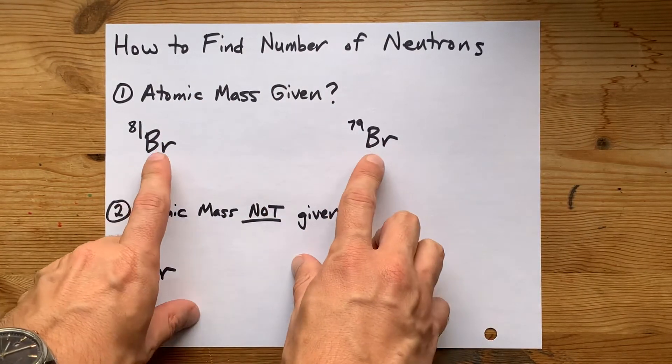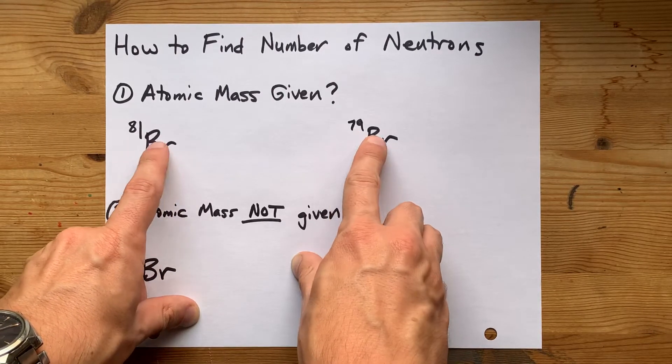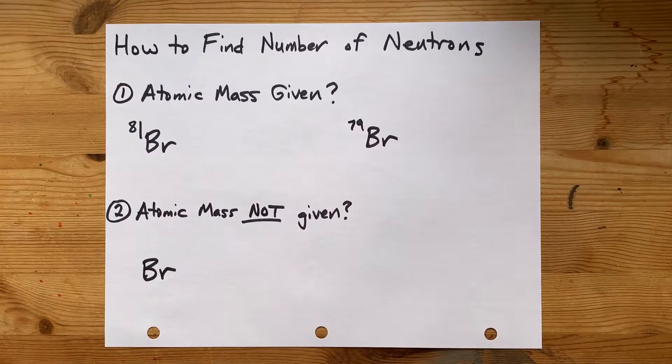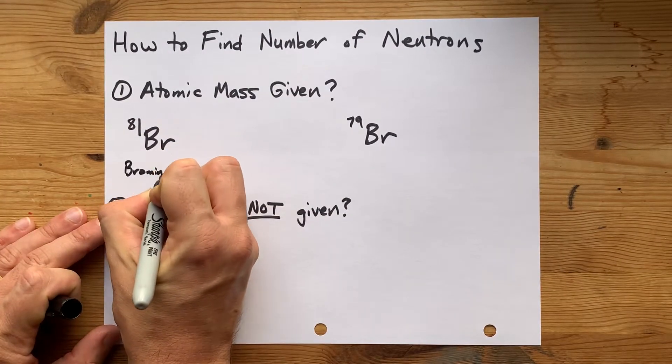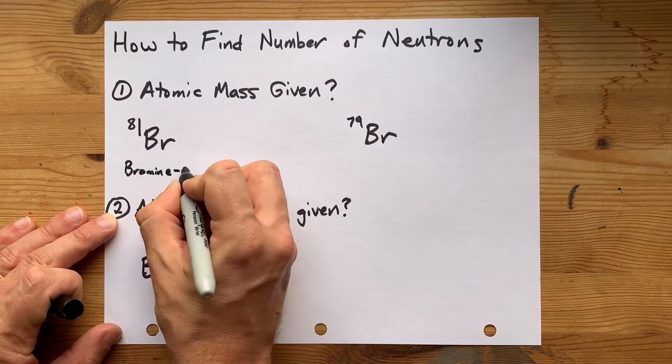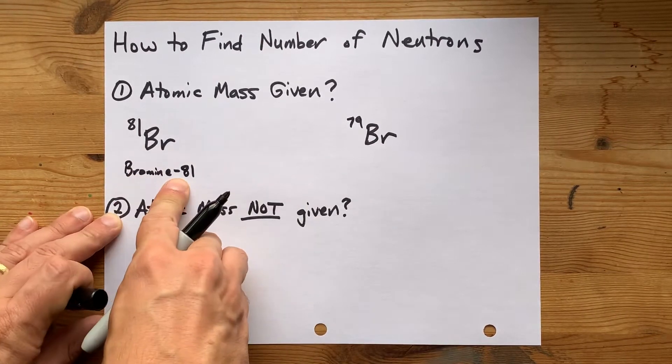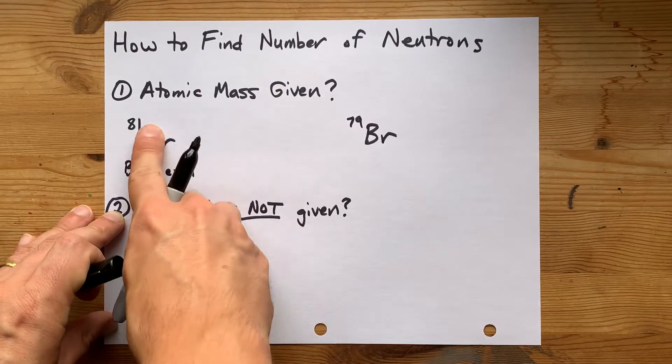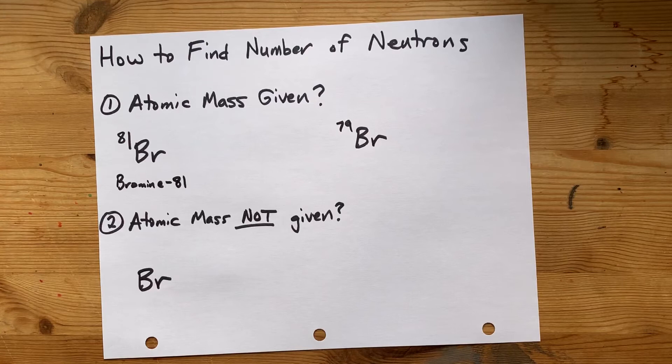You'll know this is given because you'll see a symbol with the number written in the upper left-hand corner. Sometimes teachers will also write out the name of the element, bromine, dash, and then that mass. So bromine 81 is this Br atom with an 81 written in the upper left-hand corner.